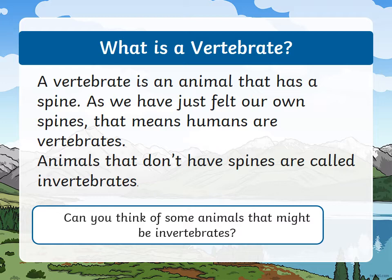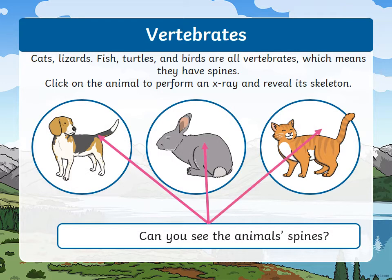What is a vertebrate? A vertebrate is an animal that has a spine. As we have just felt our spine, that means humans are vertebrates. Animals that do not have spines are called invertebrates. Can you think of some animals that may be invertebrates? Cats, lizards, fish, turtles, and birds are all vertebrates, which means they have spines.